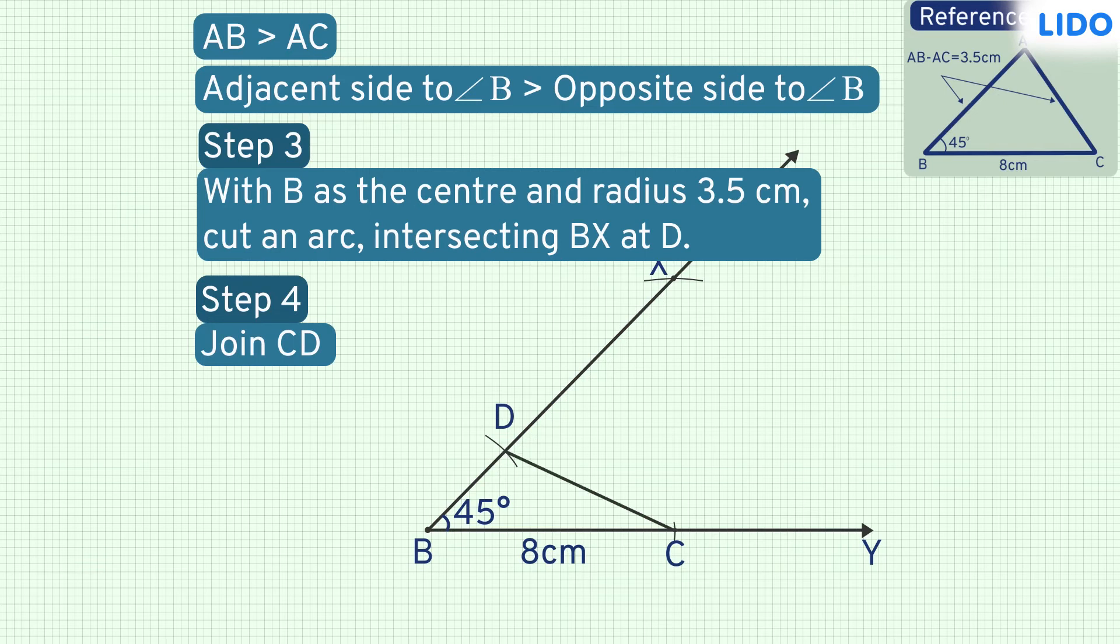Joining C and D gives us another triangle BDC, but we have to construct triangle ABC. Notice that to construct triangle ABC, all we need is the location of vertex A.